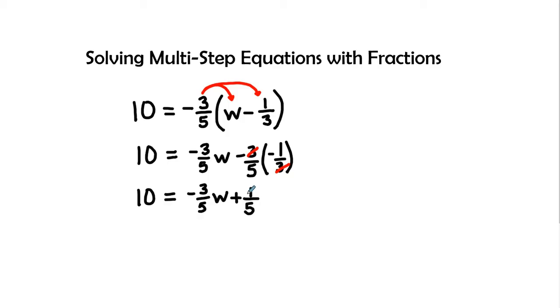Now let's see, we need to isolate this variable w. So with that I am going to need to get, or actually I'm going to multiply by getting rid of these fractions first.